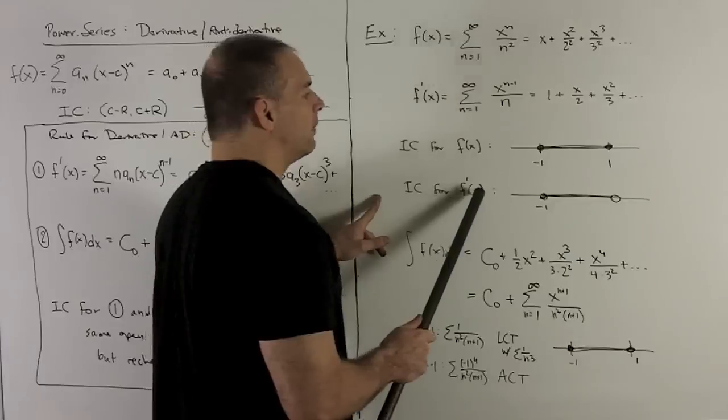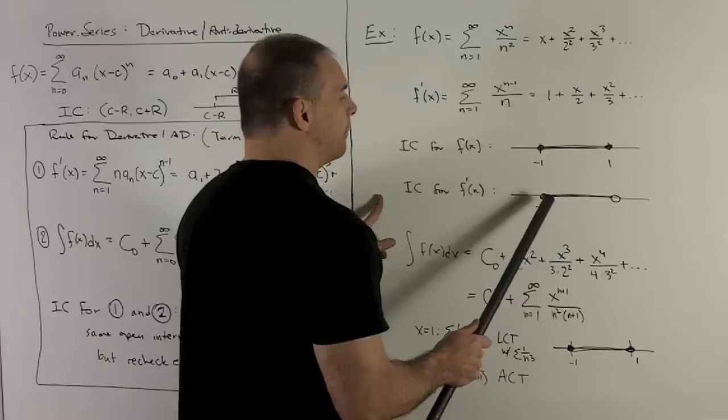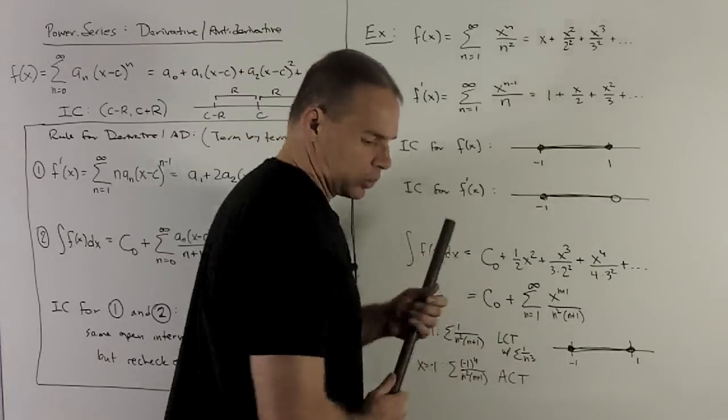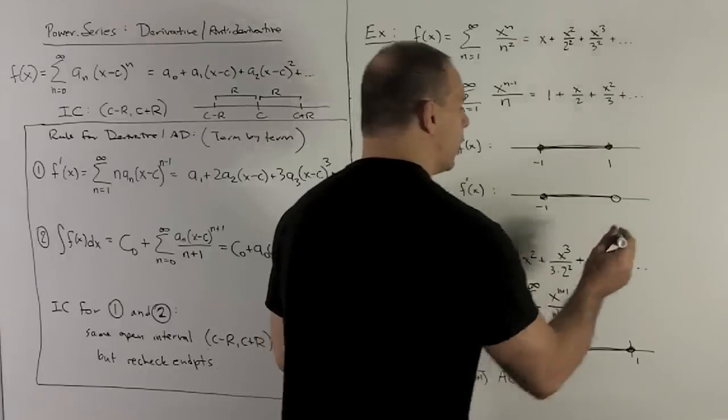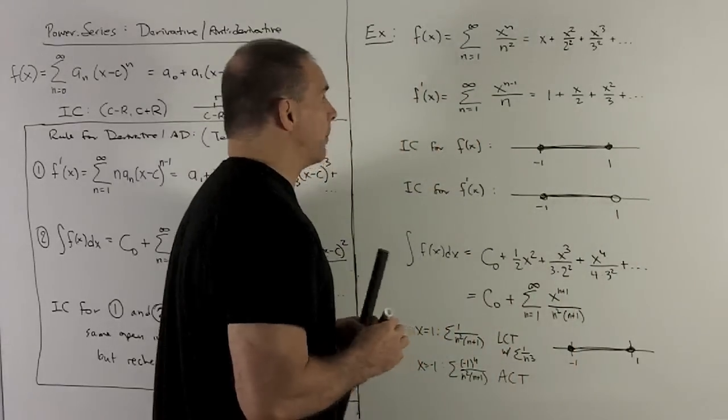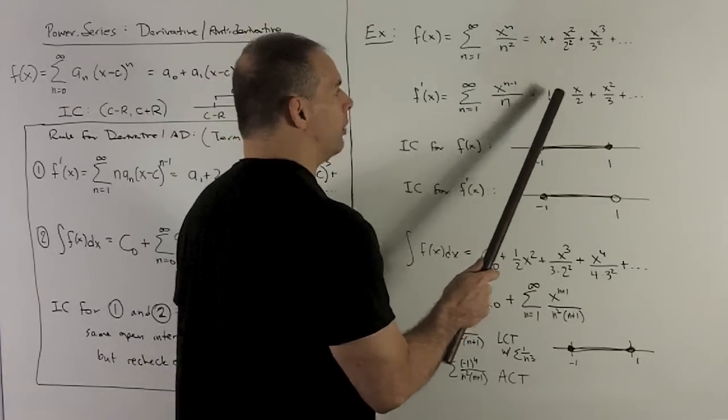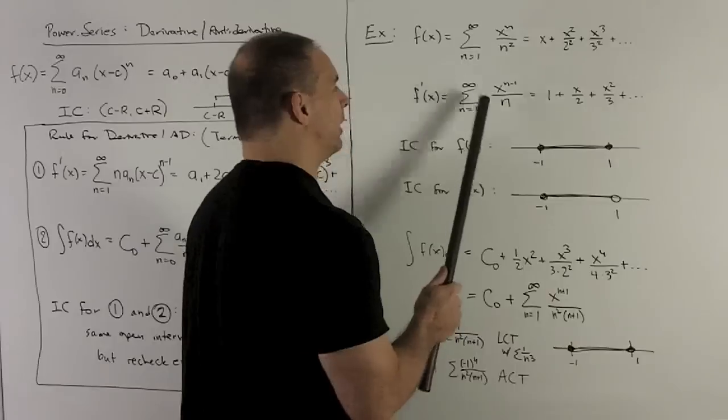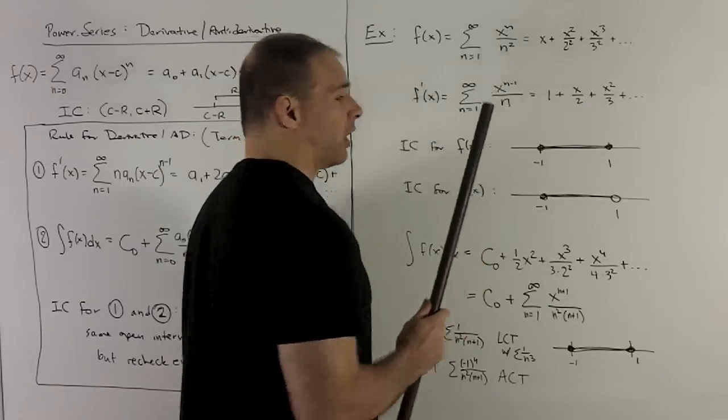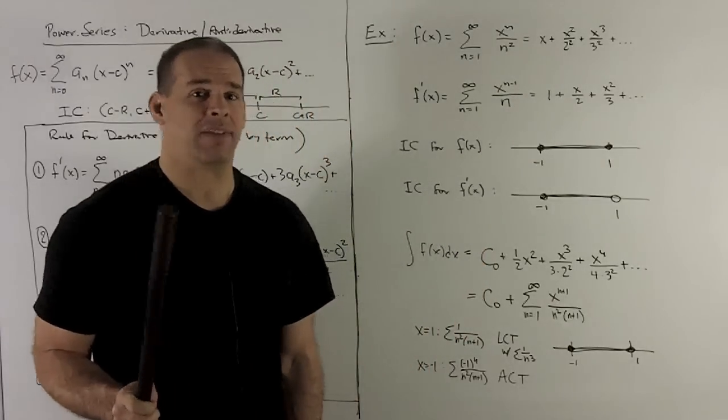What about for the new function? For the derivative, interval of convergence is going to be exactly the same. It's going to be from minus one to one. But we note, if I put one into it, what happens. If we put one into here, we're going to have one plus a half plus a third plus a fourth. That's going to be the series for one over n. We know that thing diverges.